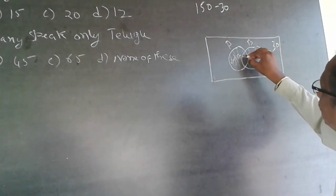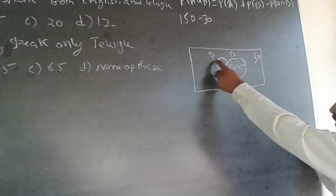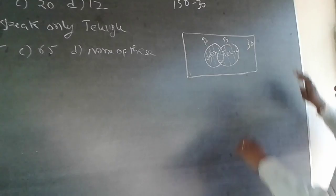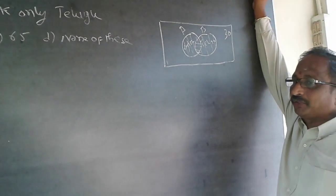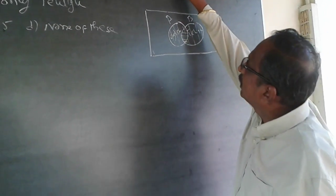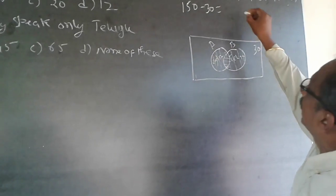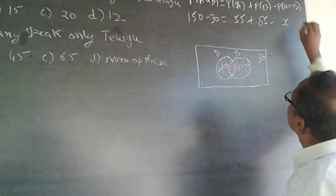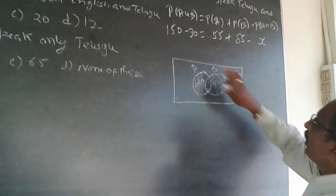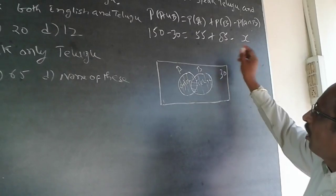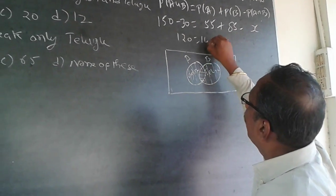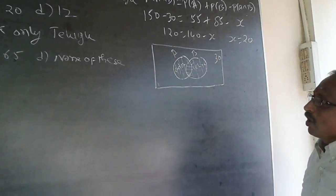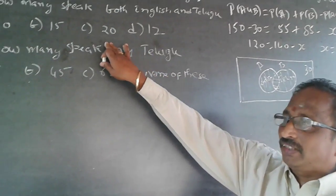The common part — the intersection — is where both English and Telugu speakers overlap. Those people appear twice, which is why a reduction takes place. A is 55 (English) and B is 85 (Telugu), so: 120 = 55 + 85 − X, which gives 120 = 140 − X, therefore X = 20.